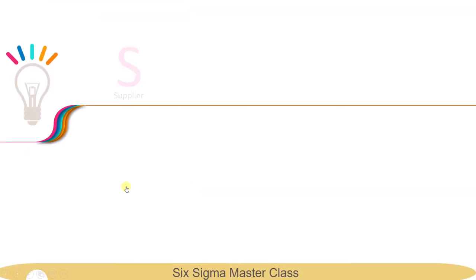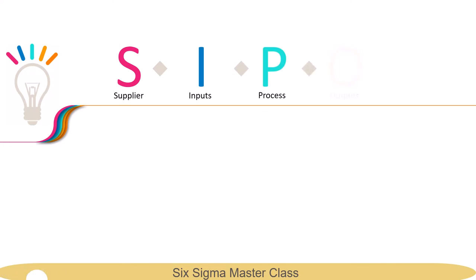SIPOC stands for Supplier, Inputs, Process, Outputs, and Customer. SIPOC is the highest-level map containing the dimensions: suppliers, inputs, process, outputs, and customers related to the process.